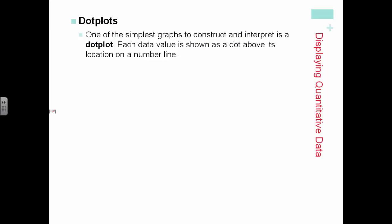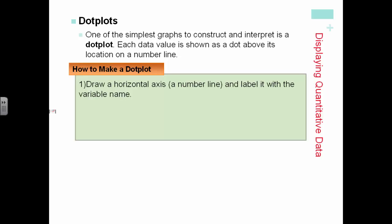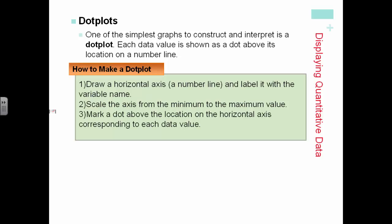One of our easiest graphs to construct and interpret is a dot plot, which in the previous lesson you saw an example of already. To make a dot plot, draw a horizontal number line and label it with a variable name. Scale the axis from the minimum to the maximum value. Mark a dot above the location on the horizontal axis corresponding to each data value.